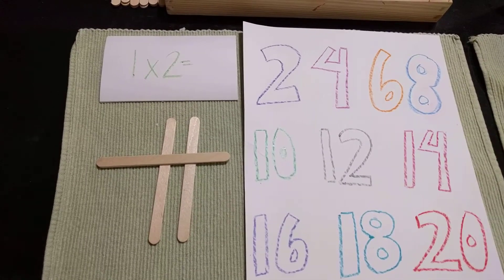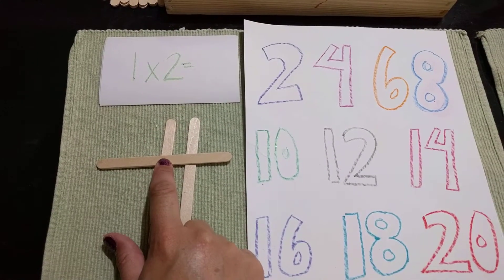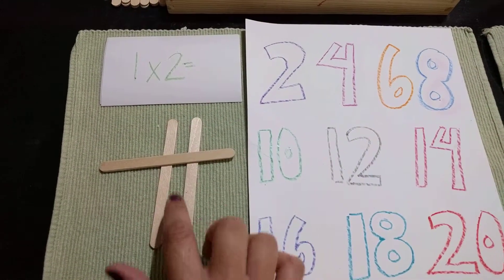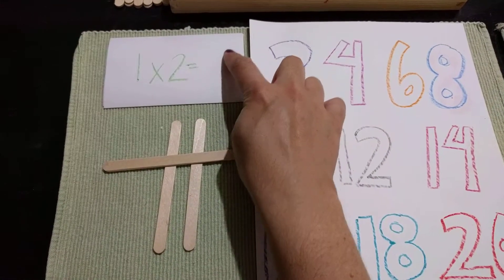Let's practice multiplying by 2. 1 times 2. Here's 1 times 2. 1, 2. 1 times 2 is 2.